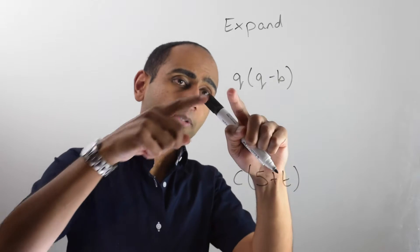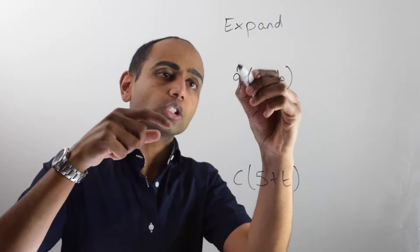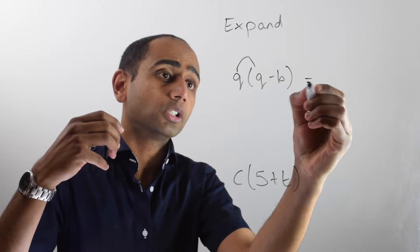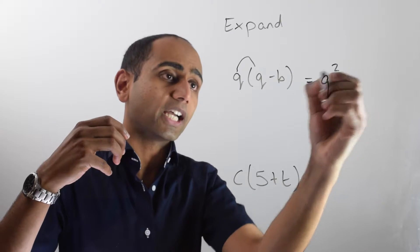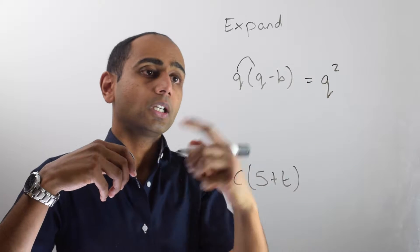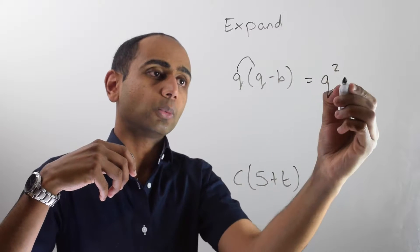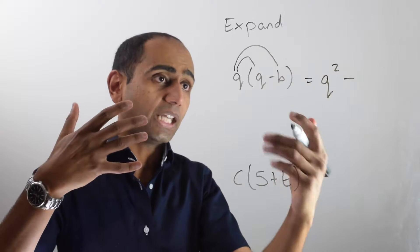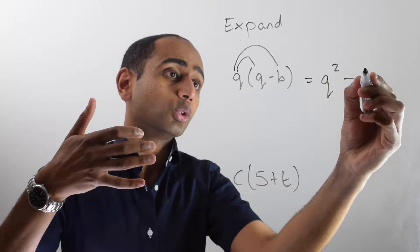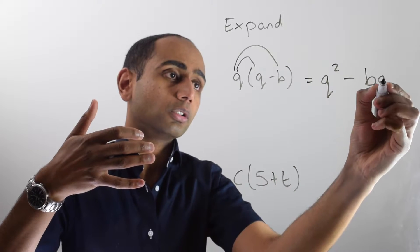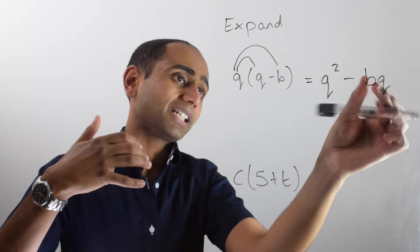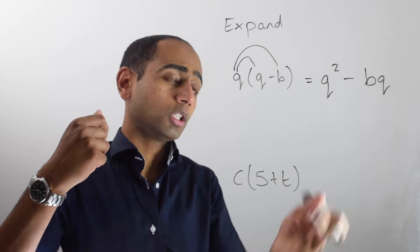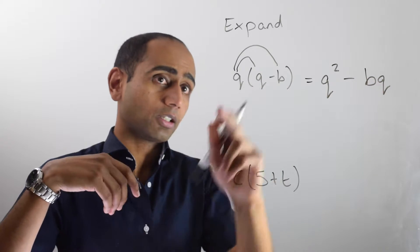In this example, I'm going to have q lots of q, or q times q, which is q squared, and then I'm going to take away q times b, which is qb or bq. It doesn't matter whether you write qb or bq — I'm just going to put it in alphabetical order.